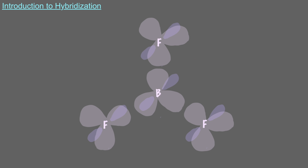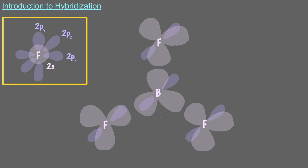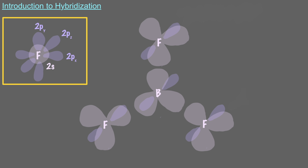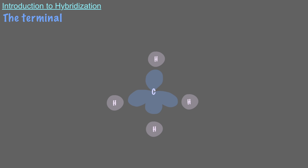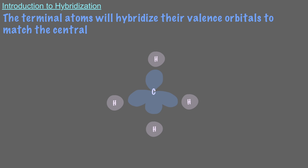Notice that each of the fluorine's valence orbitals have hybridized as well, and they've hybridized to match the hybridization of the central boron atom. Each fluorine had one 2s and three 2p orbitals to start, but now each fluorine has three hybrid sp2 orbitals and one unhybridized p orbital. The terminal atoms will hybridize to match the central atom — almost always. They will hybridize their valence orbitals to match the central atom if they can. But hydrogen's valence shell is n=1, so its only valence orbital is 1s, meaning the hydrogens in methane cannot hybridize and remain 1s orbitals.